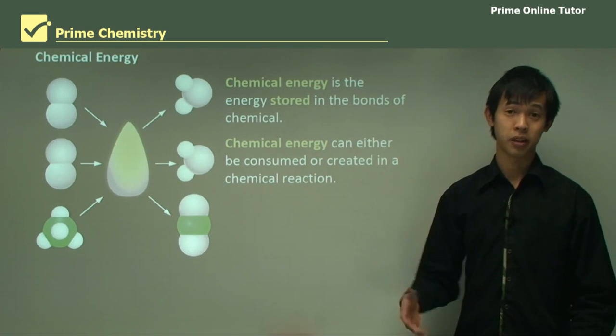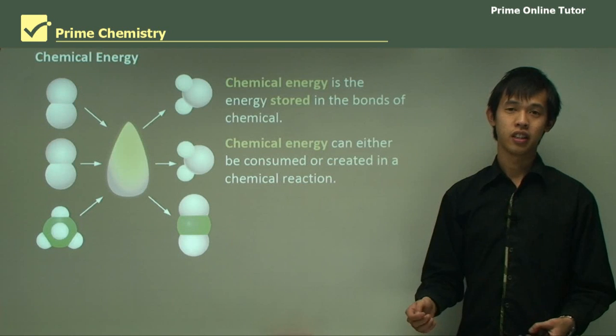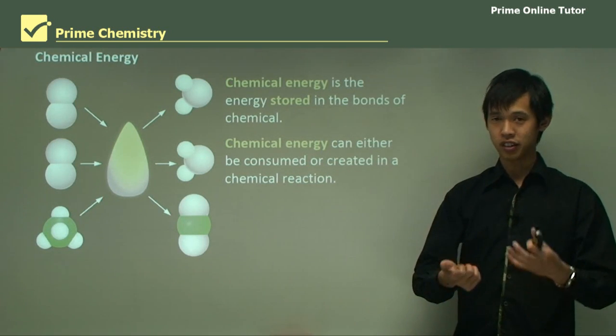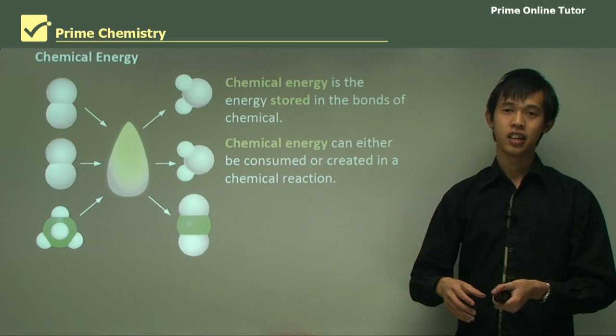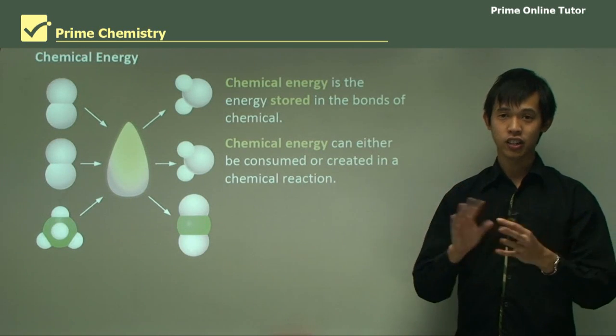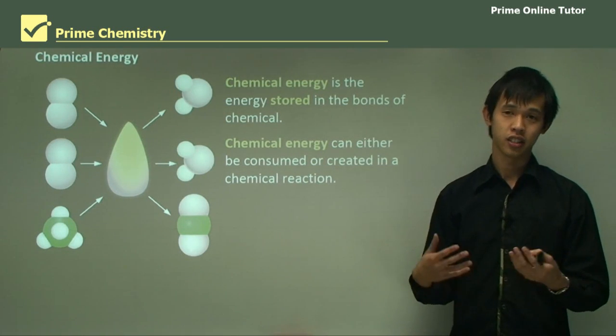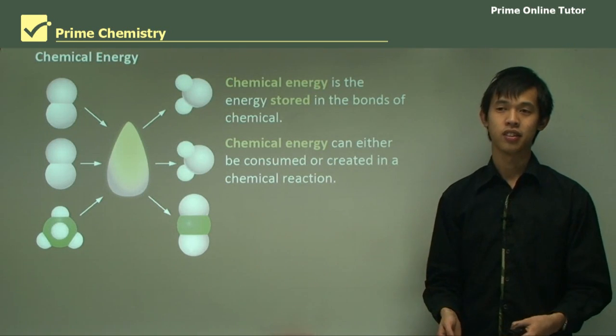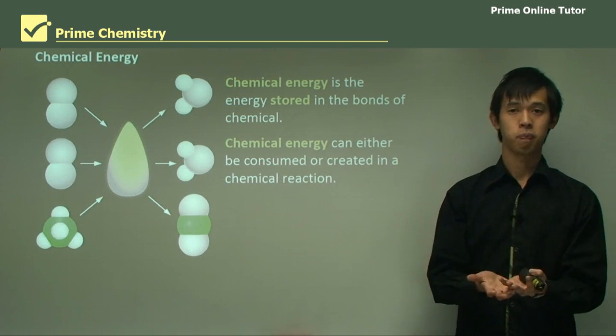Similarly, another obvious example would be if you were to burn something. The chemical energy was in the fuel to start with, then you lit it on fire, the heat and the light transferred energy away from it. And so that energy is converted to thermal energy, heat energy and light. And so the chemical energy is being consumed.